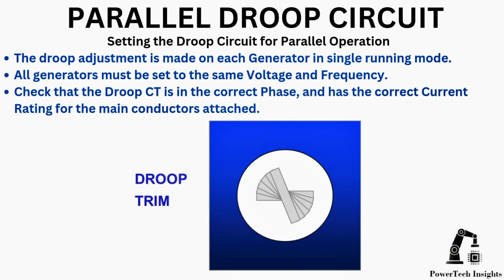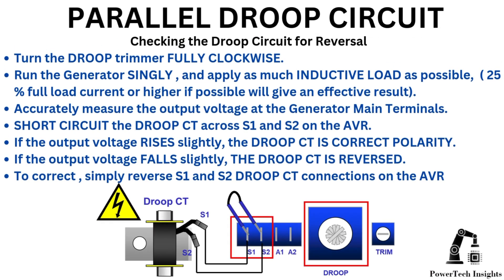Setting the droop circuit for parallel operation: the droop adjustment is made on each generator in single running mode. All generators must be set to the same voltage and frequency. Check that the droop CT is in the correct phase and has the correct current rating for the main conductors attached. To check droop circuit for reversal, turn the droop trimmer fully clockwise. Run the generator singly and apply as much inductive load as possible — 25% full load current or higher if possible will give an effective result. Accurately measure the output voltage at the generator main terminals. Short circuit the droop CT across S1 and S2 on the AVR. If the output voltage rises slightly, the droop CT is correct polarity. If the output voltage falls slightly, the droop CT is reversed. To correct, simply reverse the S1 and S2 droop CT connections on the AVR.